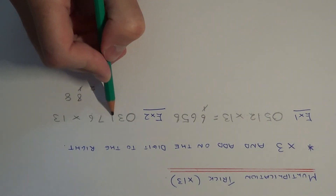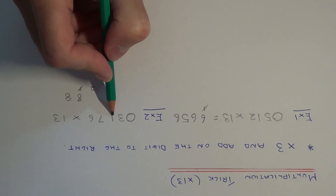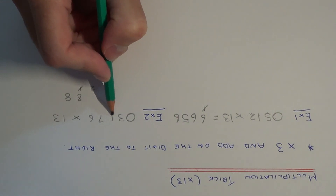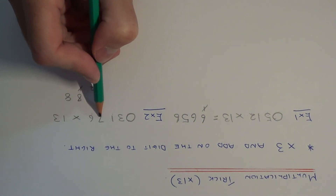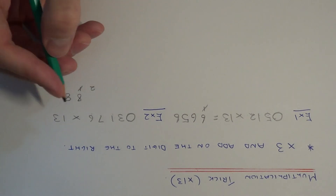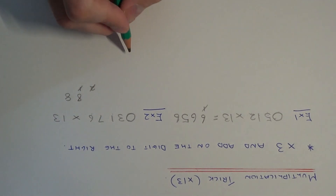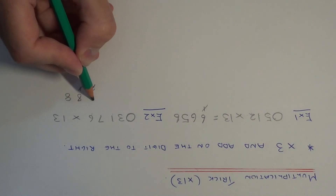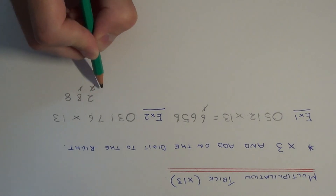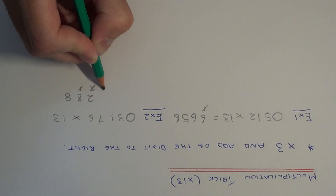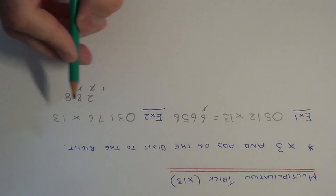We then move on to the 1: 1 times 3 is 3. Add on the 7 to the right of it — 3 add 7 is 10 — plus the 2 that I've carried makes 12. So put the 2 at the top, carry the 1 into the next column.